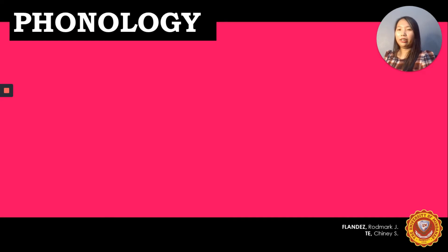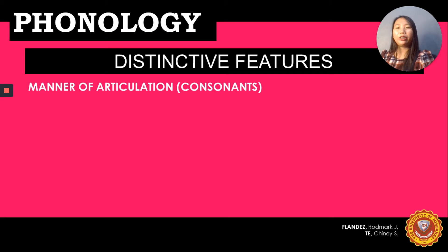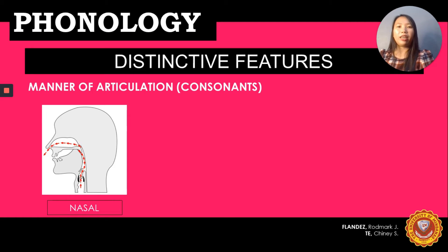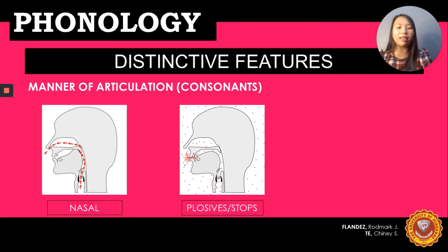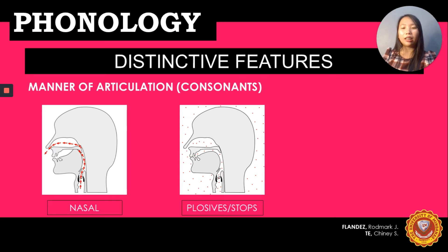Good day everyone. I will now continue the discussion on the distinctive features of phonology: manner of articulation in consonants. We have nasal — referring to the production of sounds with a lowered velum in the mouth, allowing air to escape freely through the nose. Next, plosives or stops — consonant sounds produced by a momentary blocking of airflow and the sudden release of blocked air. The plosives are: P, B, T, D, K, and G.